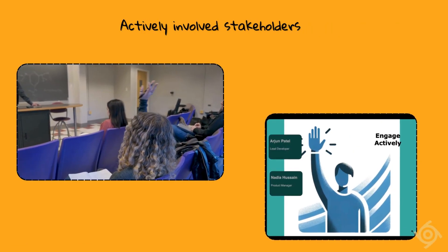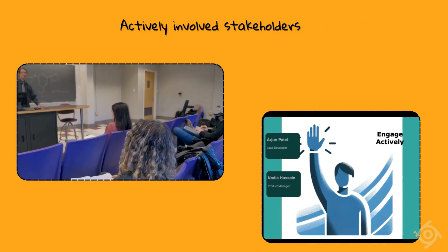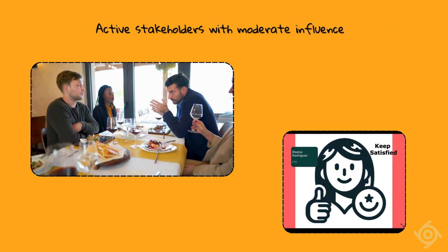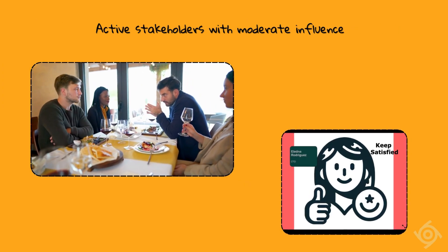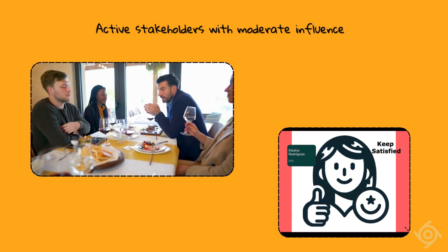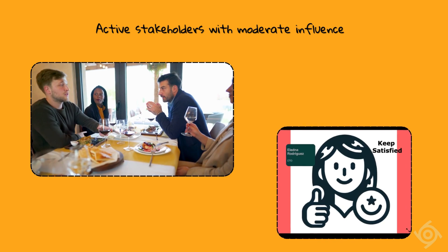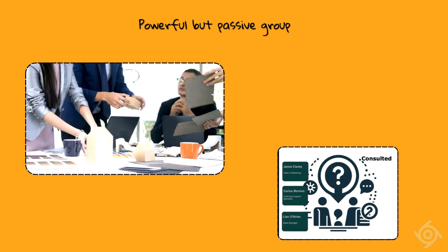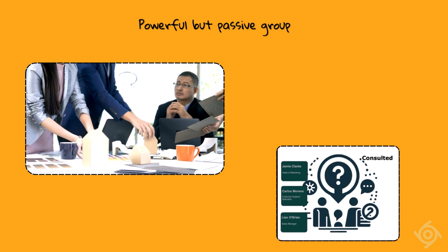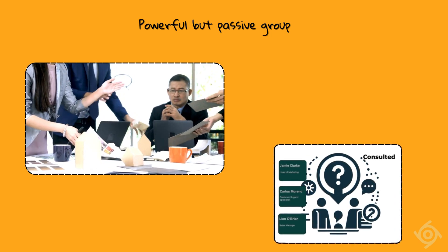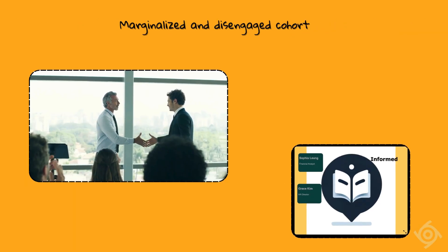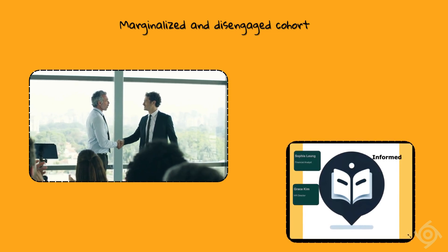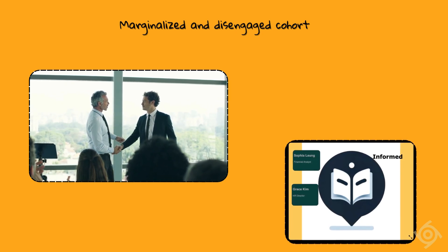The right top quadrant is therefore the quadrant of highly influential and highly engaged stakeholders. The right bottom quadrant is the quadrant of highly engaged but not highly influential stakeholders. The left top quadrant is the quadrant of highly influential but low interest group. And finally, the left bottom quadrant represents people who have low influence and low interest.